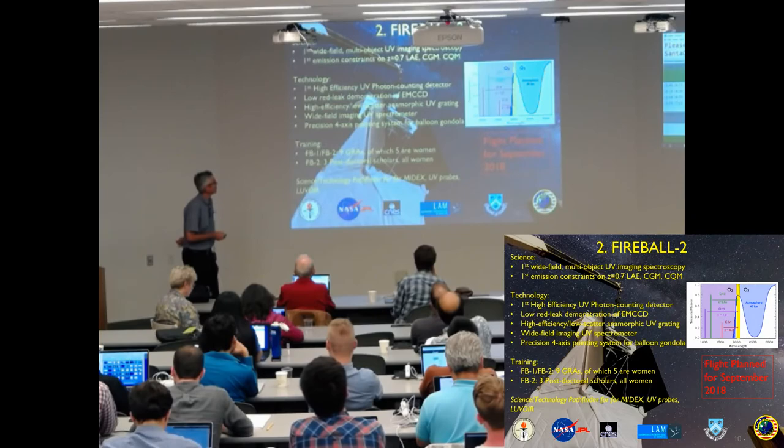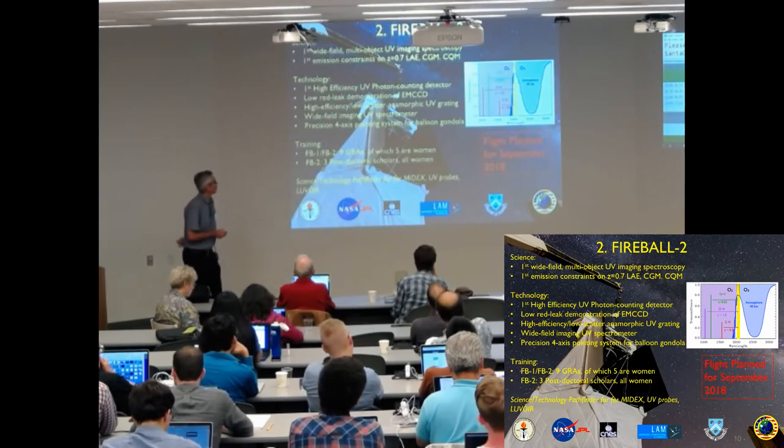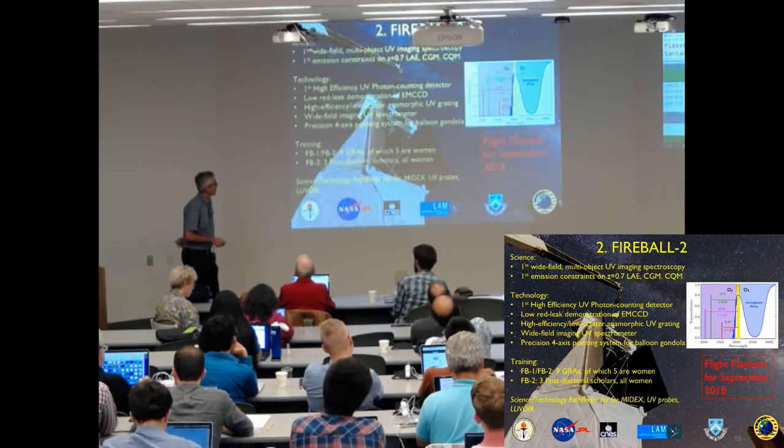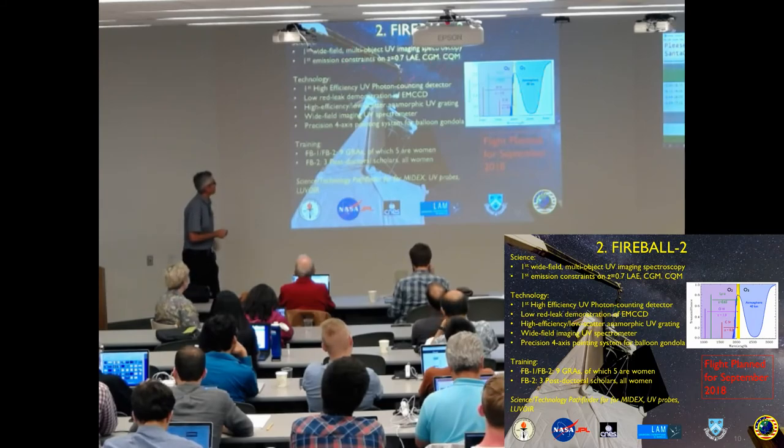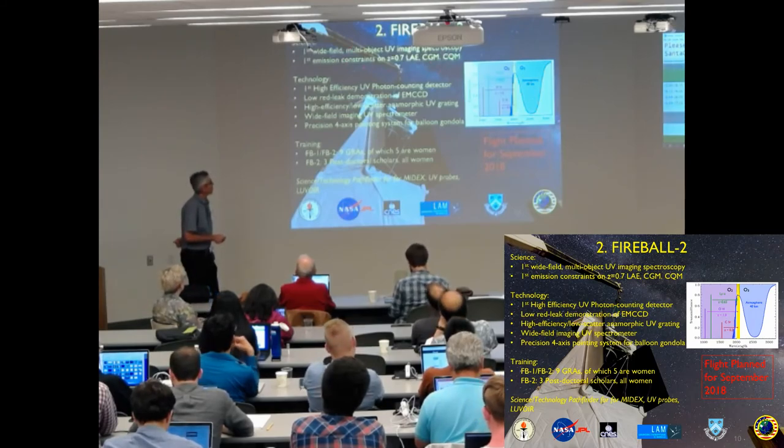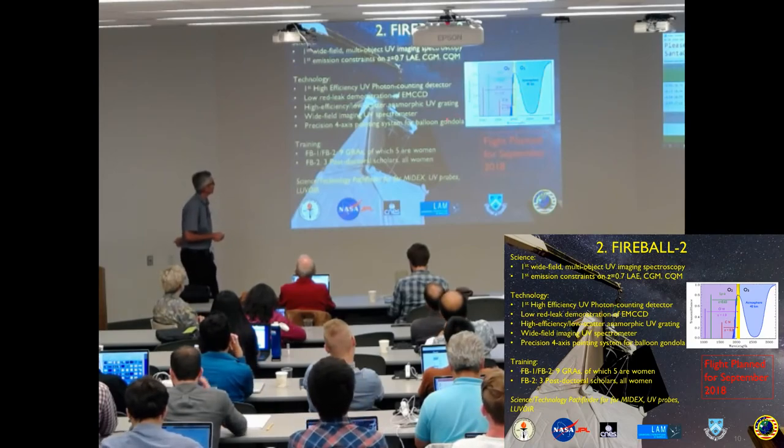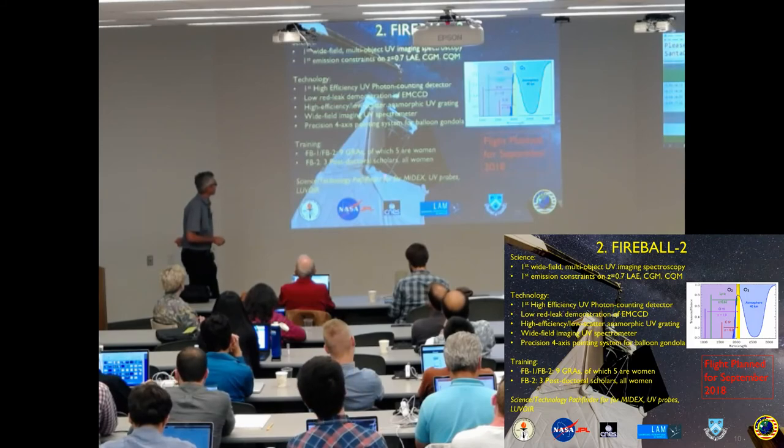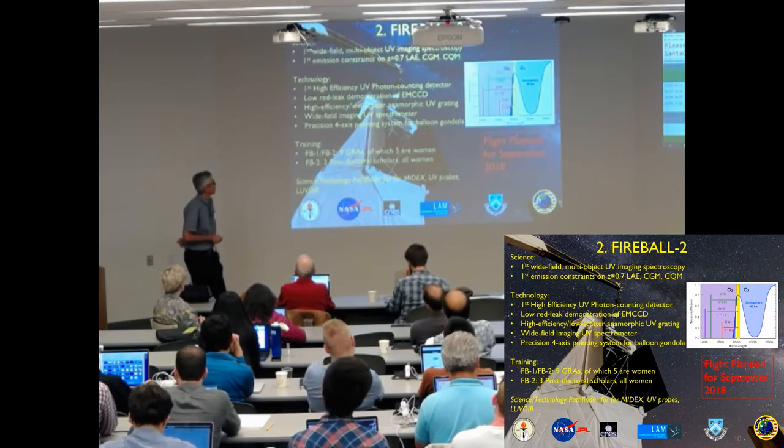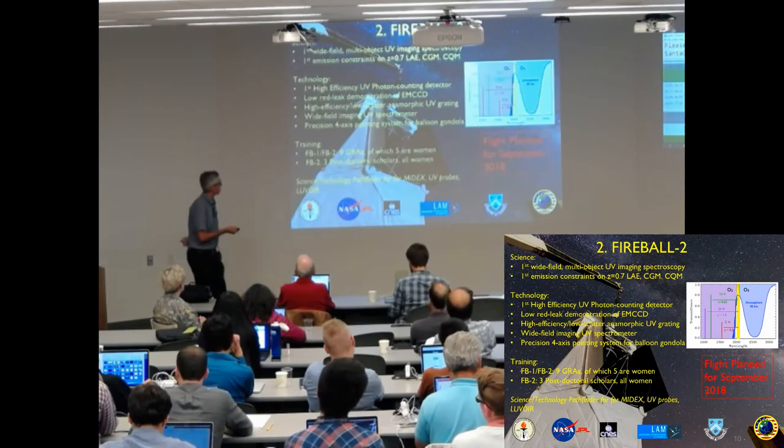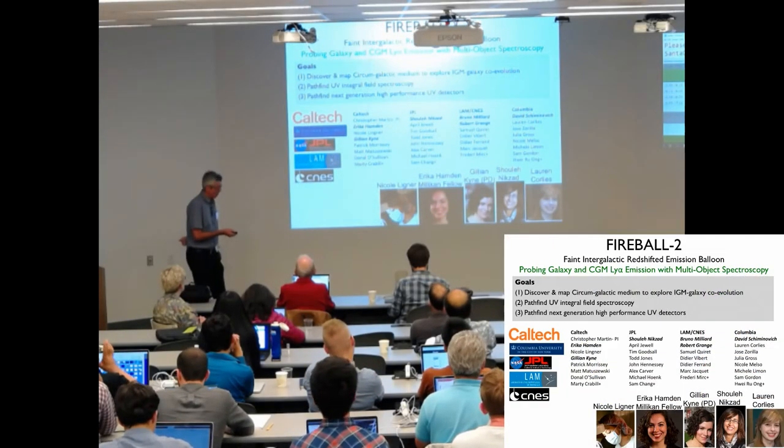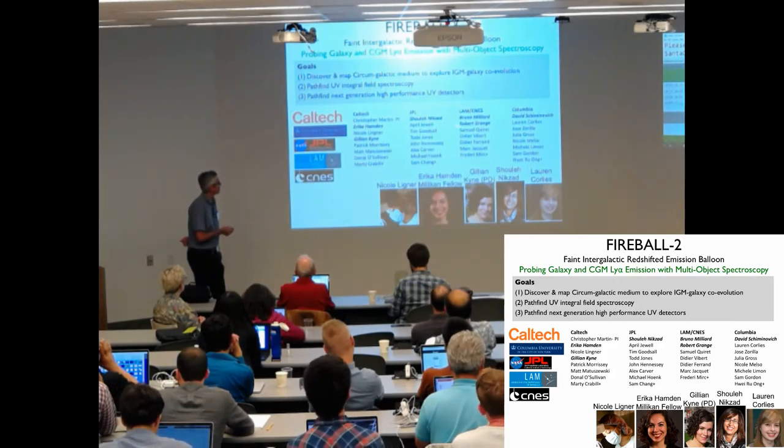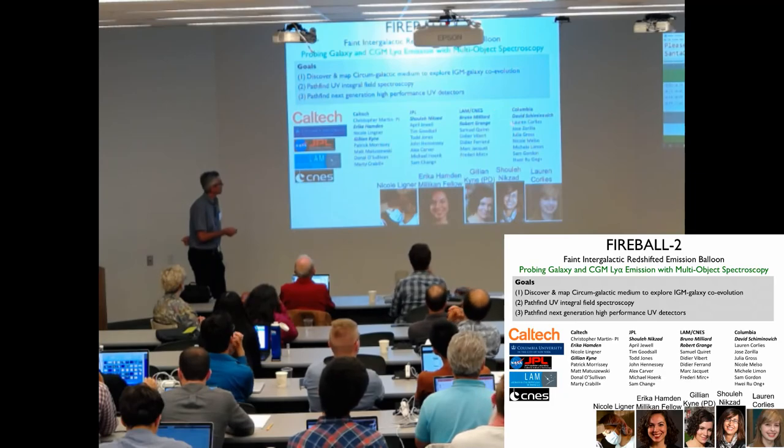So to explore the low-redshift universe, and to pioneer the technology, we have an instrument called Fireball. We hope to fly it this September. It's the first wide-field multi-object UV imaging spectrometer. It's designed to do 50 objects per field of Lyman-alpha emitting galaxies at redshift 0.7, found by ground-based surveys. And it has many features to test new technology, and it does a lot of training as well. All this science and technology is Pathfinder for MUSE-X, for UV probes, LUVOIR, et cetera. And just a few words about it. It's a large collaboration, Caltech, JPL, Marseille, CNES, Columbia University.